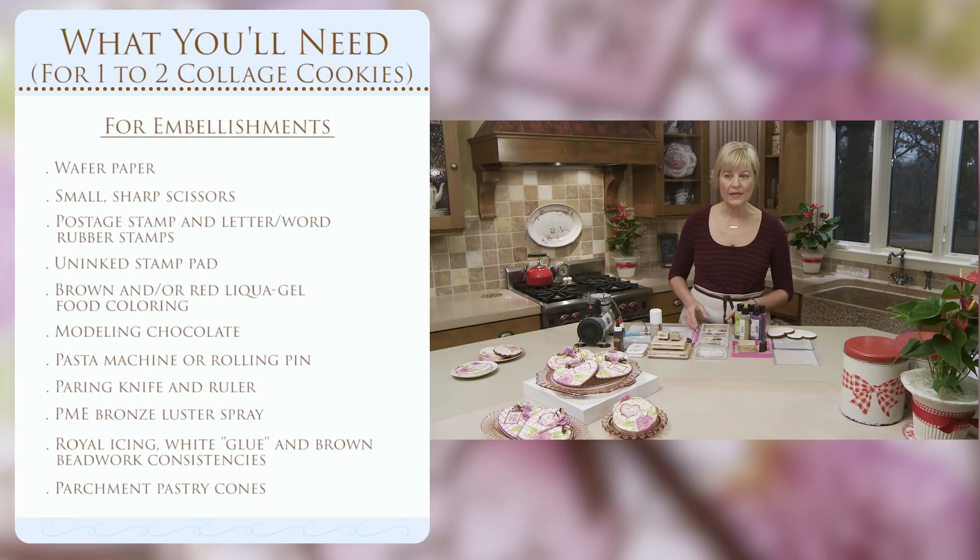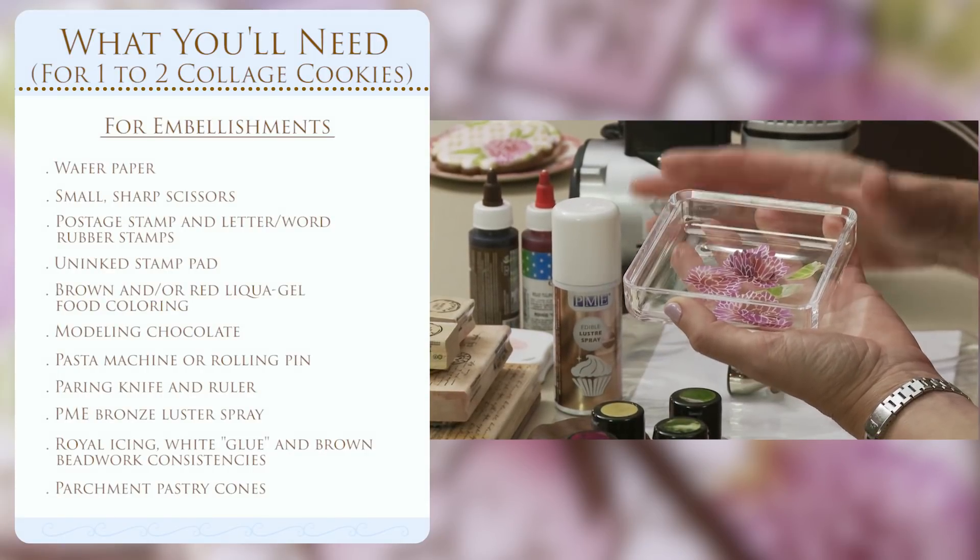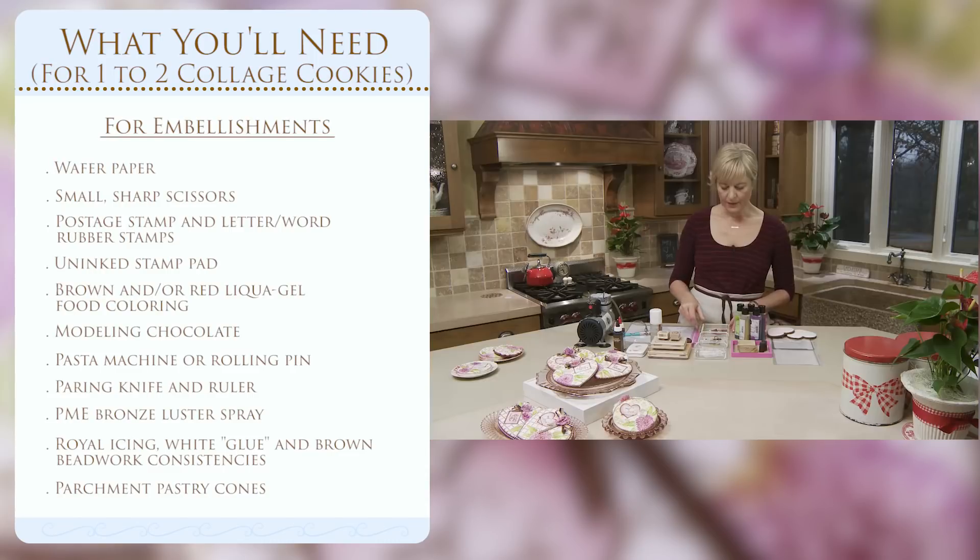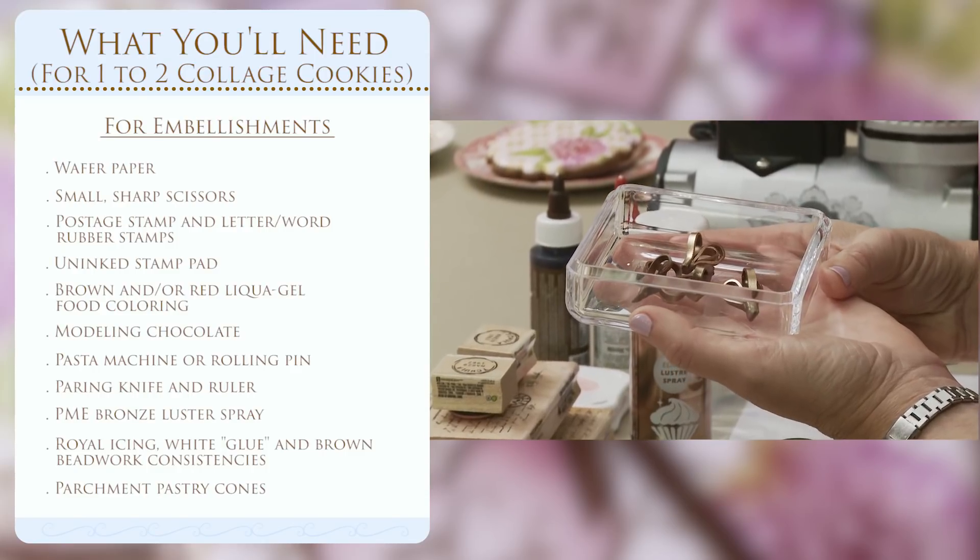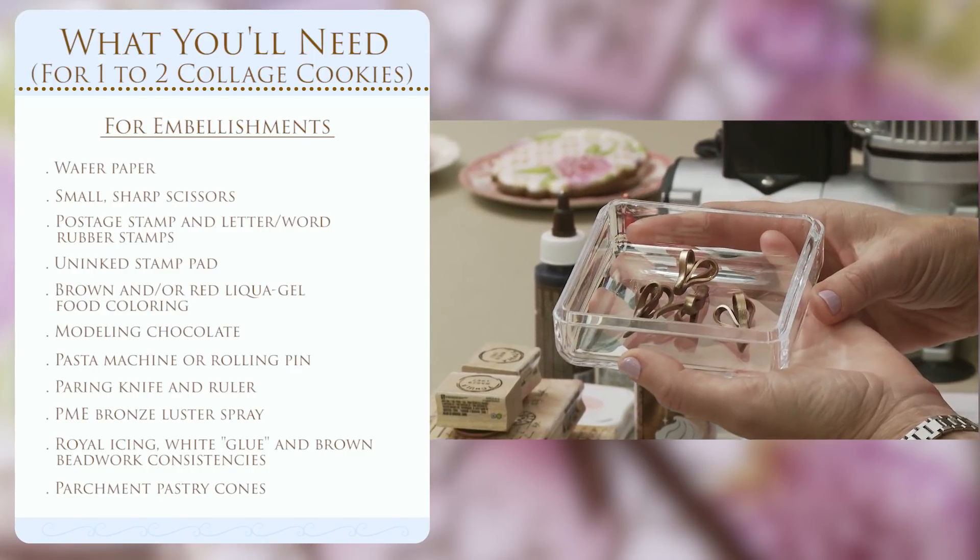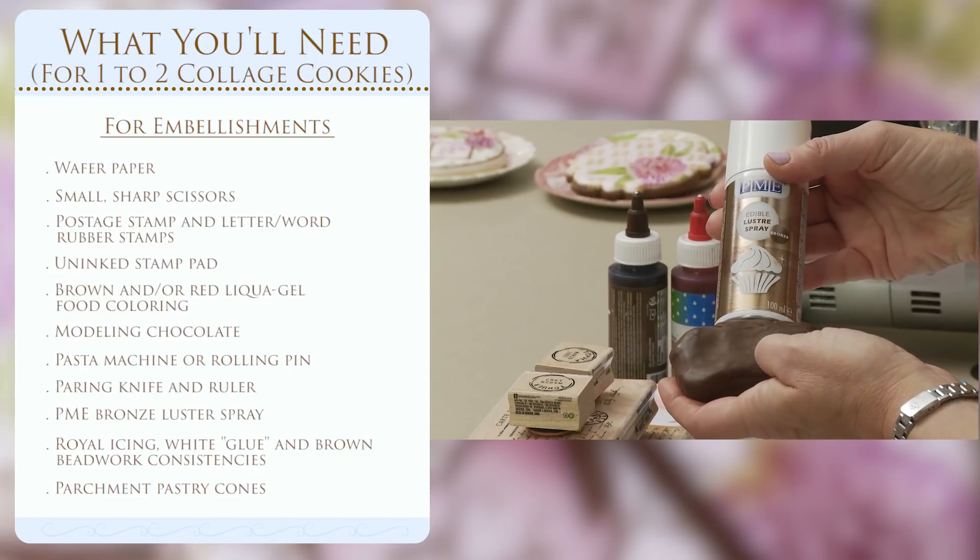Now in terms of the added embellishments that go on top of the cookies I mentioned four. One is stamping directly on the cookies. A second is creating dimensional wafer paper flowers that use the same stencil to create the pattern of the flower and also the leaf. A second element are chocolate bows. I have a whole other video that talks about how to make chocolate bows so I won't belabor this point in the video but these have been made with modeling chocolate and then also gilded with a little PME bronze spray.